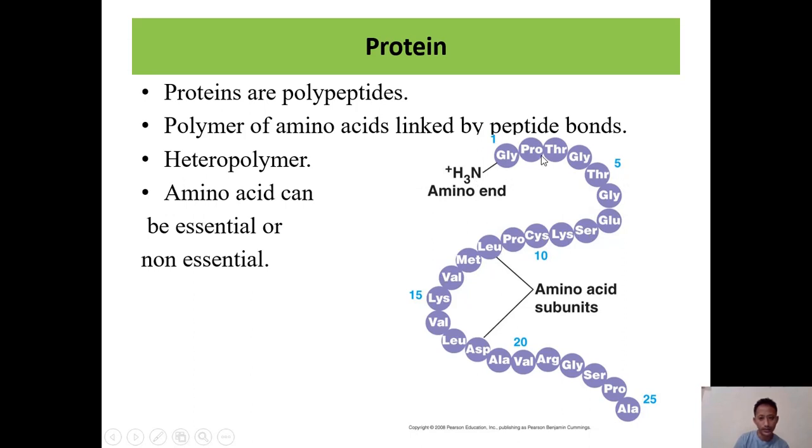The monomers or basic units are amino acids like glycine, proline, and lysine. These are protein subunits. Amino acids can be essential or non-essential. Non-essential amino acids can be synthesized by our body, while essential amino acids must be taken through diet.